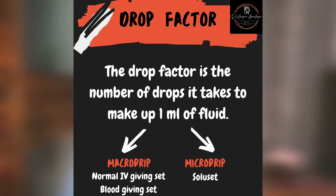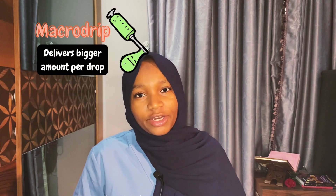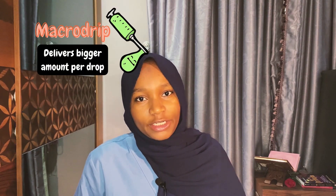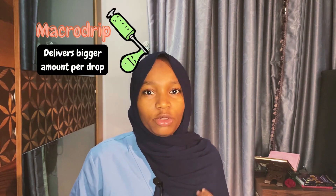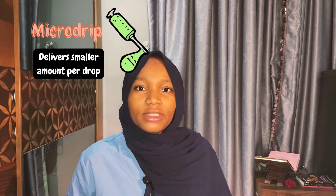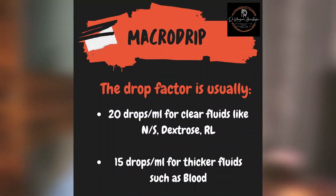So what is the drop factor? The drop factor is the number of drops it takes to make up one ml of fluid. It is usually divided into macro drip and micro drip. The macro drip gives a bigger amount per drop, hence fewer drops are needed to make up one ml of fluid, while the micro drip gives a lesser amount per drop, hence more drops are needed to make up one ml.